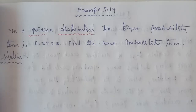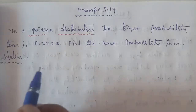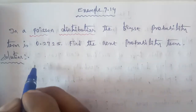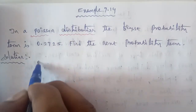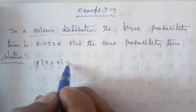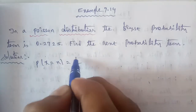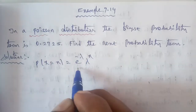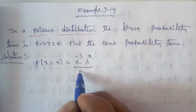In a Poisson distribution, we know the formula: P of x is equal to e power of minus lambda, multiplied by lambda power of x, divided by x factorial.